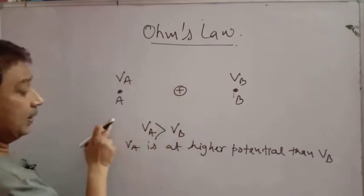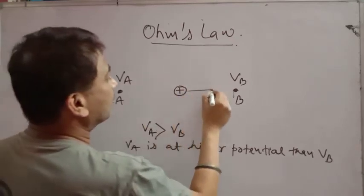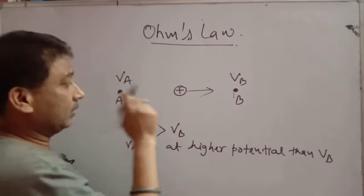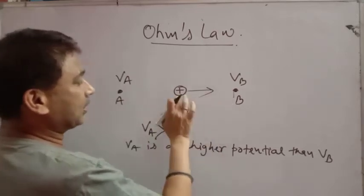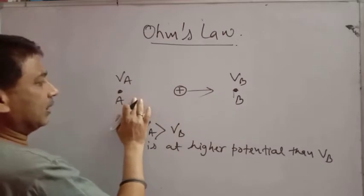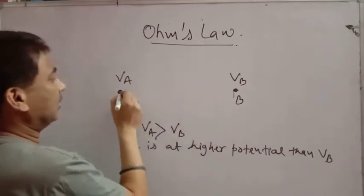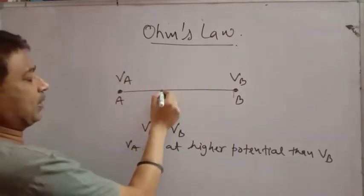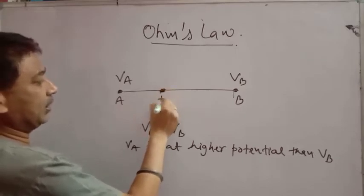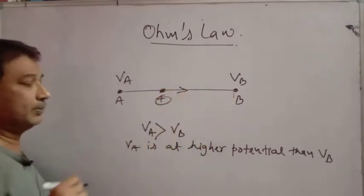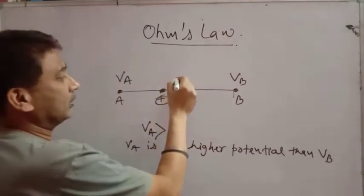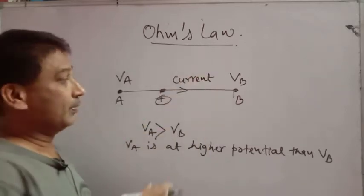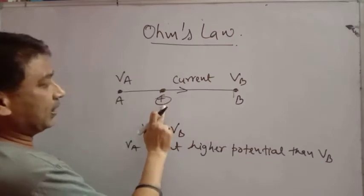Since one potential is higher, the charge will be pushed and we say that a current is set up. If we have to move a positive charge particle, we can use a wire. Suppose we connect a wire — a positive charge particle will move through it, and we say that the current is set up.